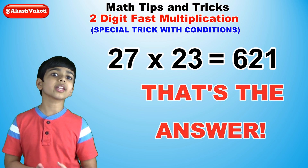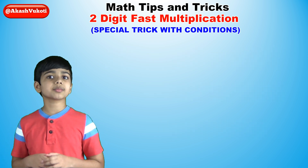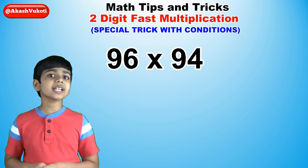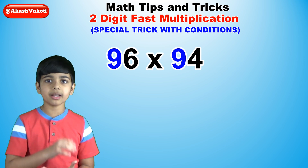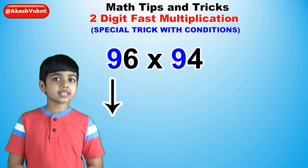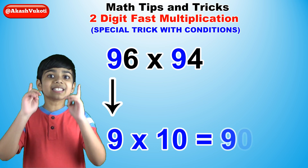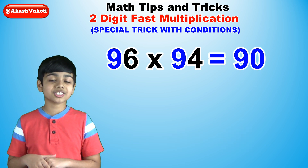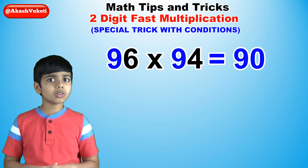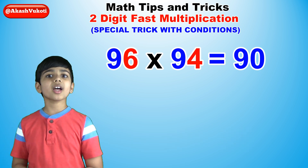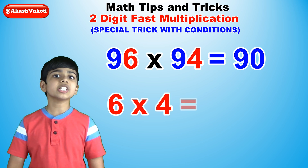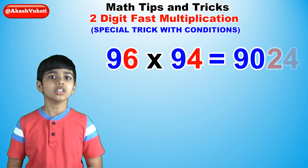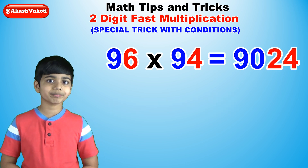Let's try another: 96 times 94. The number that comes after 9 is 10. 9 times 10 is 90, giving our first two digits. Now we multiply 6 times 4, which is 24, giving the answer 9,024.